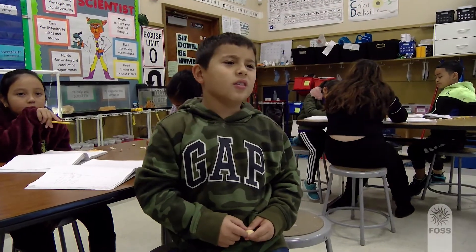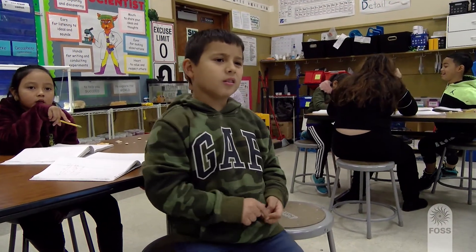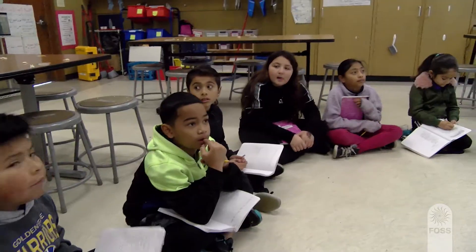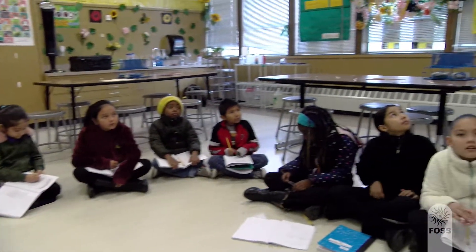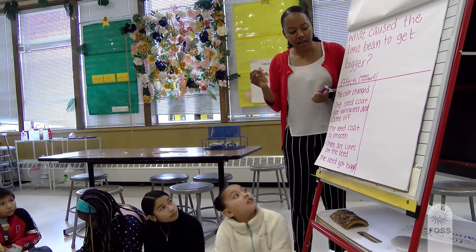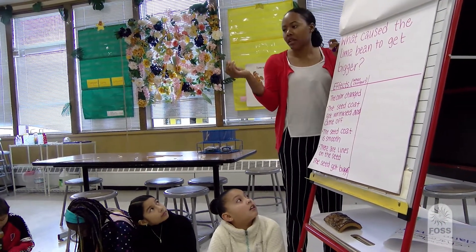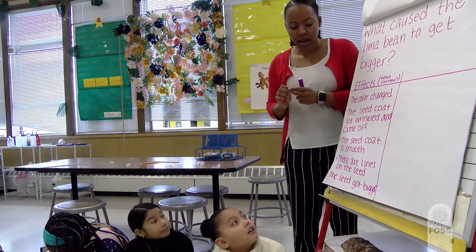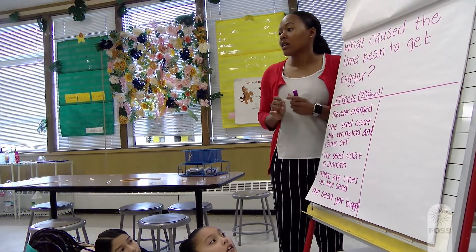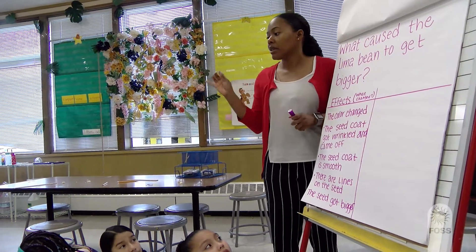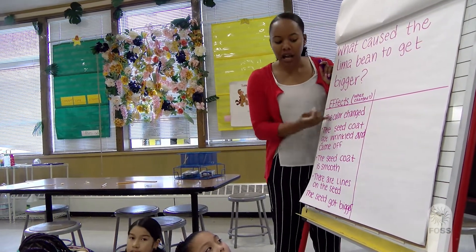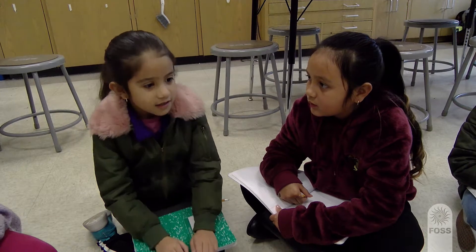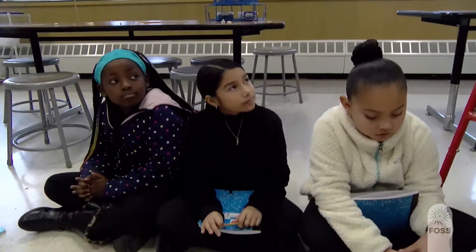Student: The seed coat keeps it warm and the coat got wrinkled and came off. Teacher: As I look at this dry seed and compare it to the wet seed, I'm not seeing some of the effects — I'm not seeing that the color changed, I'm not seeing a wrinkled seed coat, I'm not seeing that this seed is growing or getting bigger. Talk with your partner about what you think caused this. Student: The seed got bigger because it soaked up water. Teacher: So the question is, what caused the color change? Student: I think the water made the color more vibrant.